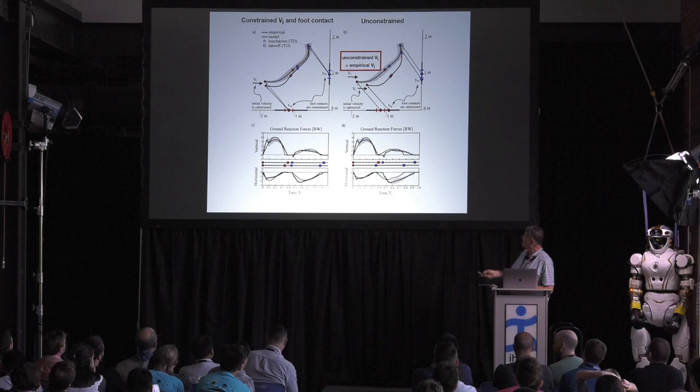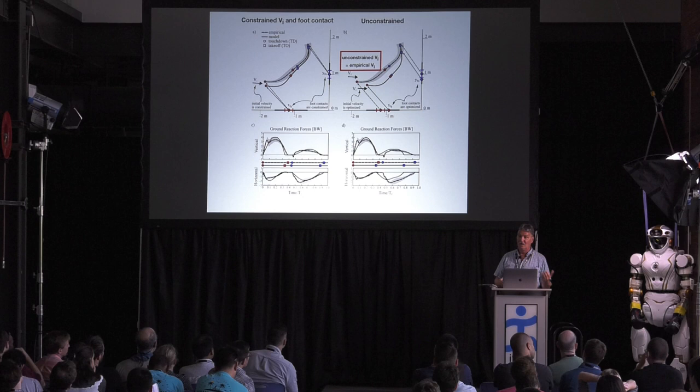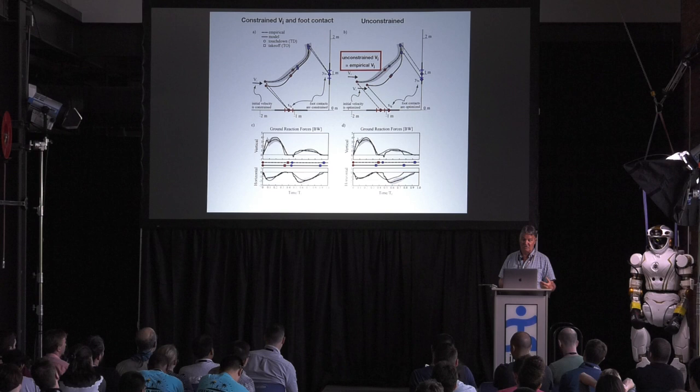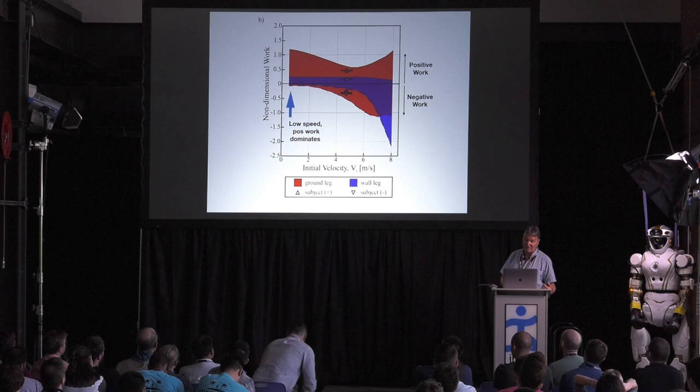But what is really cool about this is the unconstrained initial velocity and the empirical initial velocity are basically identical. And that's a really key feature to this. I think you've got two legs, you can make that transition in a certain way by making contacts at certain places. But the initial velocity tells us a lot about what's going on in this system.